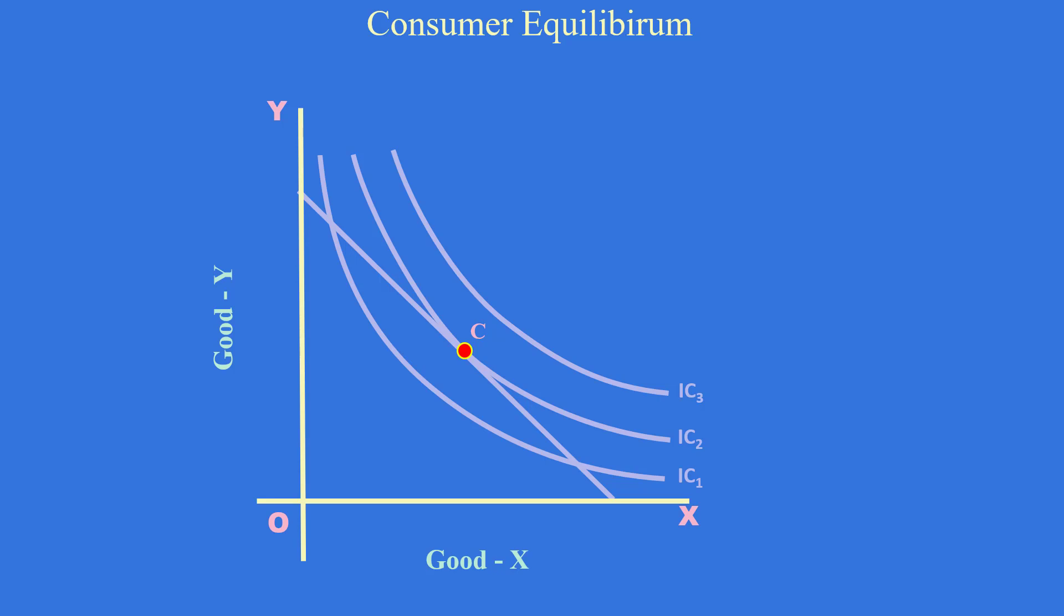C is the point of equilibrium. He consumes N units of good X and M units of good Y. At this point, all the equilibrium conditions are satisfied.